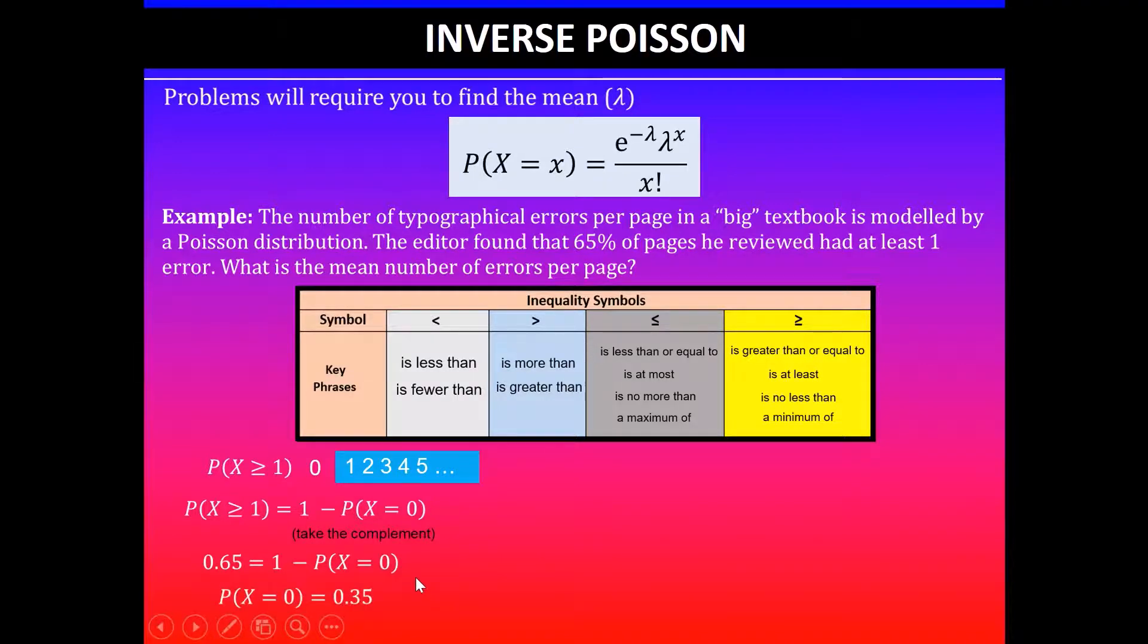From this we can rearrange and find the probability when it's exactly equal to zero, which comes to 0.35. So what this means is that if 65% of the pages the editor reviewed had at least one error, then 35% of the pages reviewed will have zero errors.